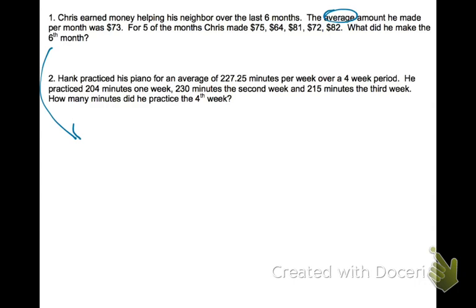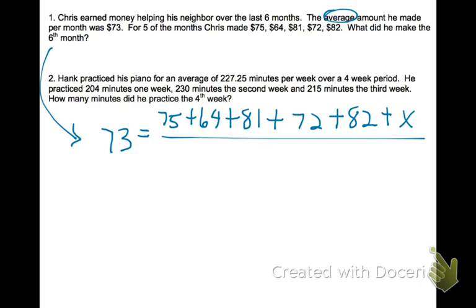So let's work this down here. We know that his average, or his mean, is $73. To find a mean, we add up all of the scores, or in this case, dollar amounts that we know. There is one that we don't know, however, so we'll say x.